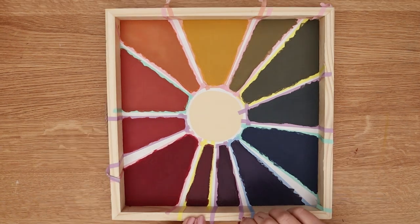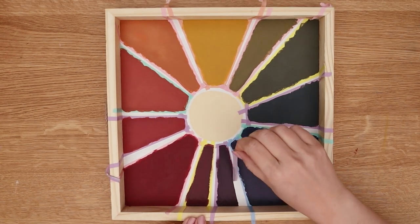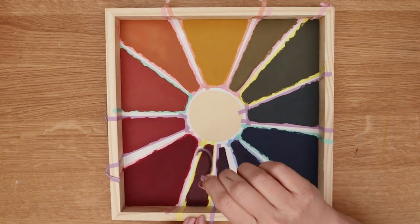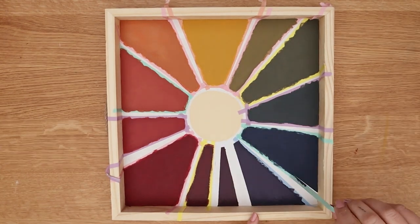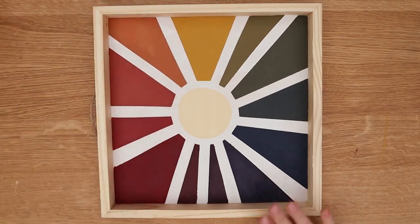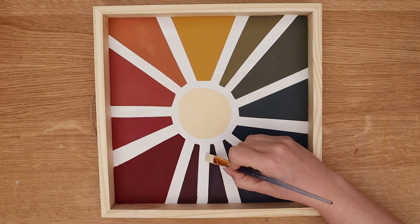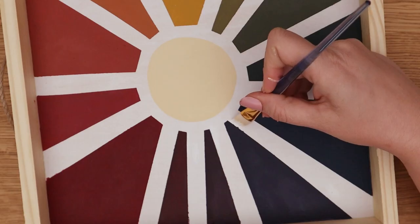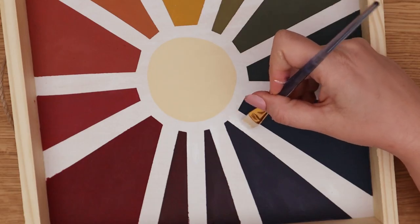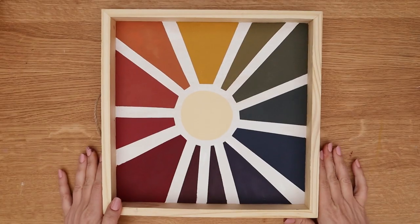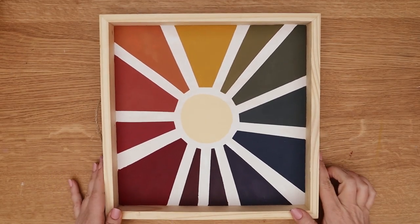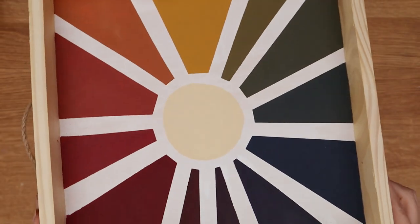After you've painted all 12 of the sections it's time to peel off the tape and reveal your design. If you have any messy edges just use a little bit of white paint and a flat brush to clean them up. And at this point your piece is all done and ready to display.